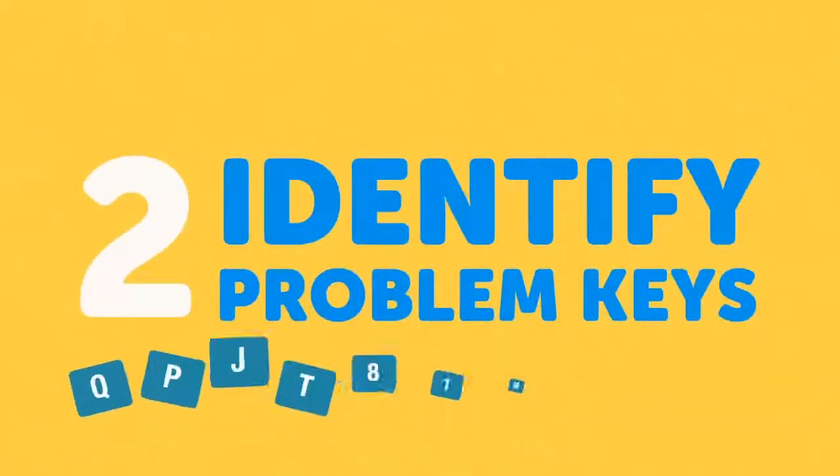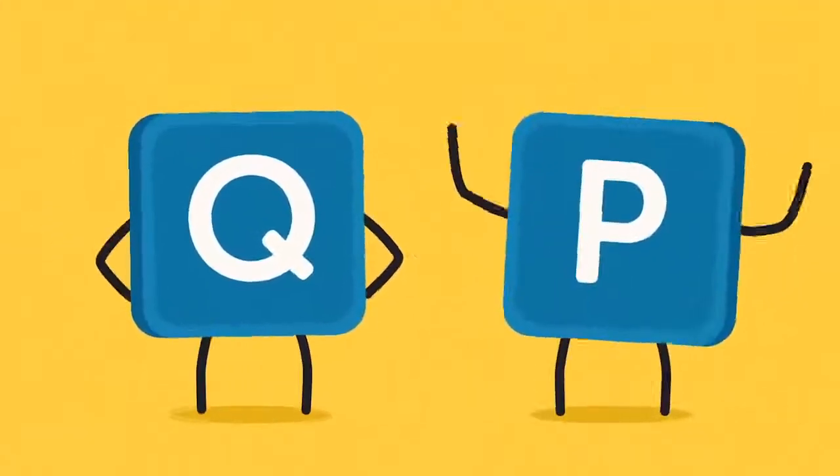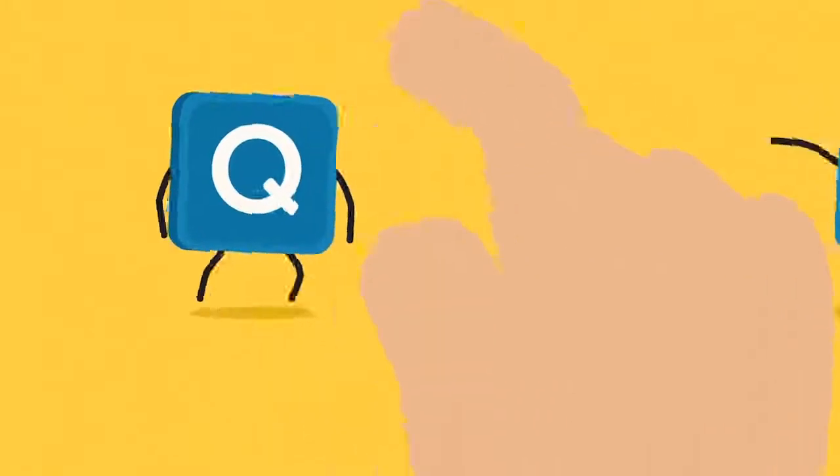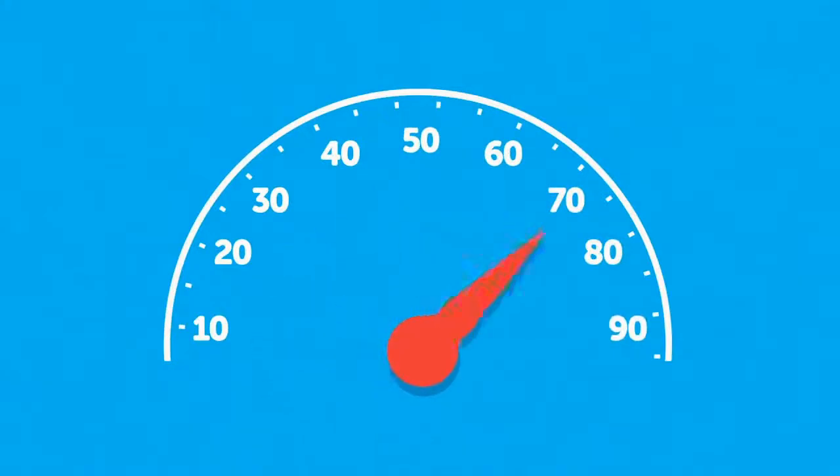Identify problem keys. When you first learn to type, you will undoubtedly encounter keys that slow you down. It is important to identify these keys and practice them on a daily basis. Practicing those problem keys for just 10 minutes a day will increase your speed and accuracy scores.